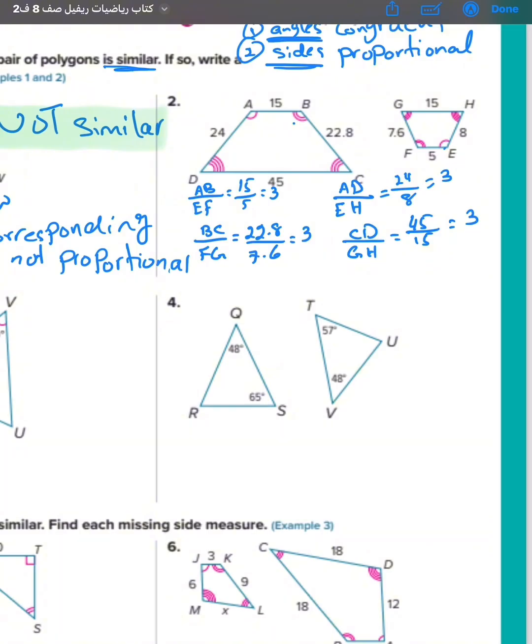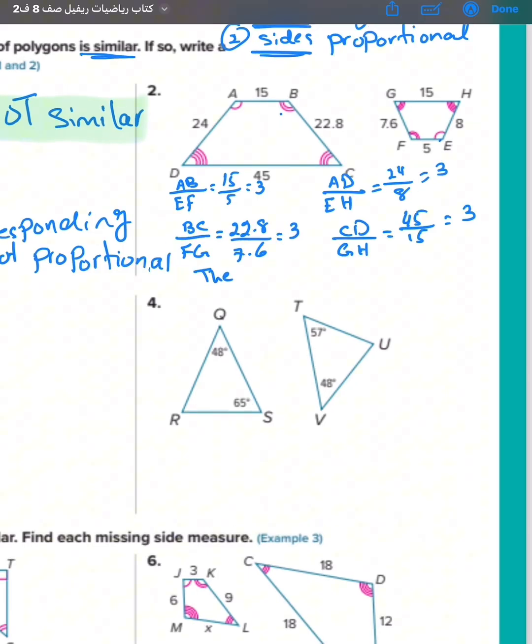The last one, CD over GH, is 45 over 15, which is also 3. So the sides are proportional, so they are similar. The sides or the ratios are equivalent, corresponding. So they are similar. ABCD is similar to EFGH. Our answer is similar.